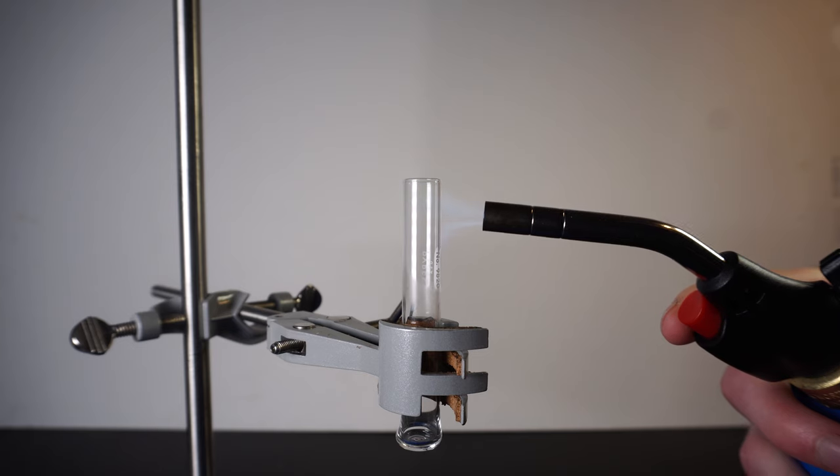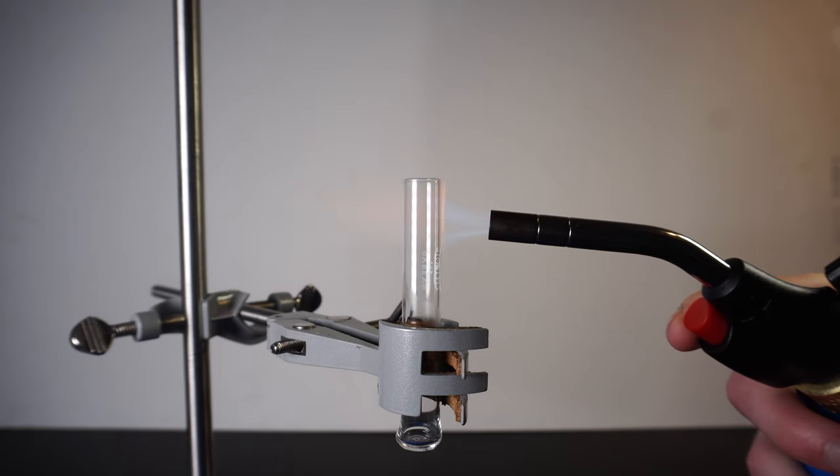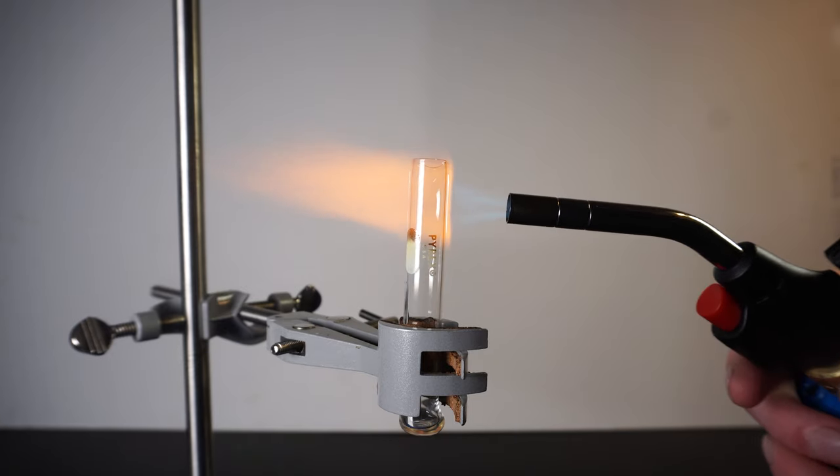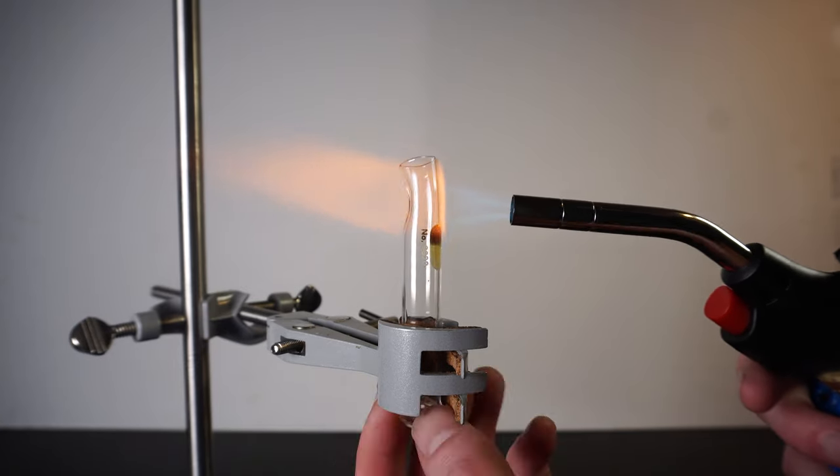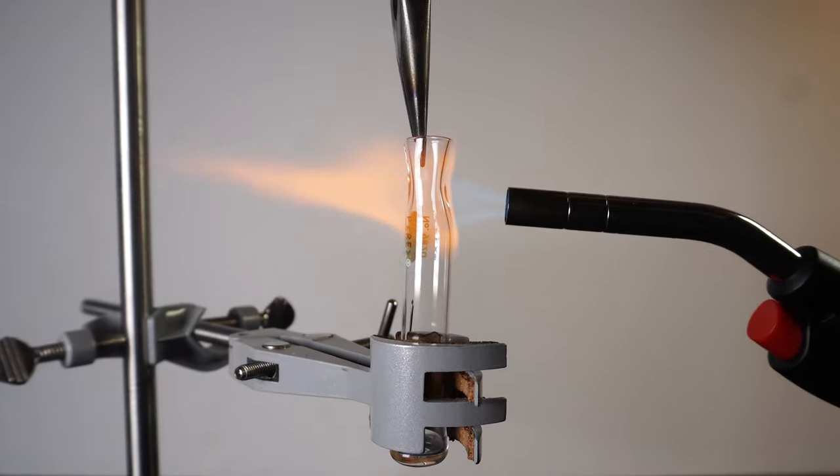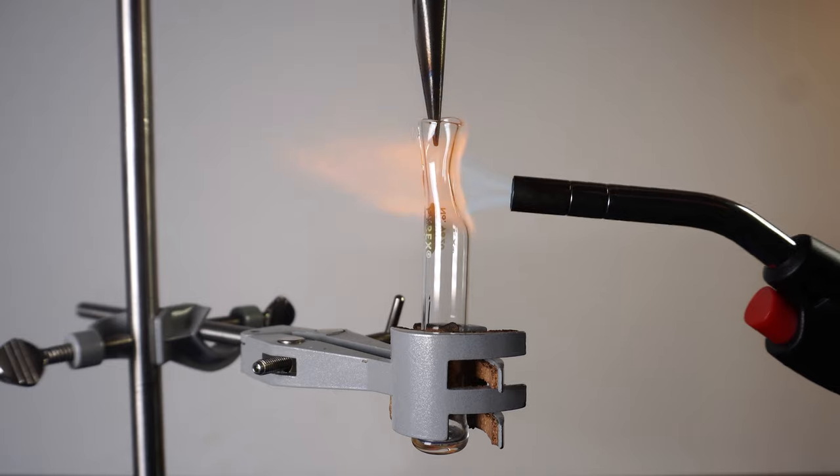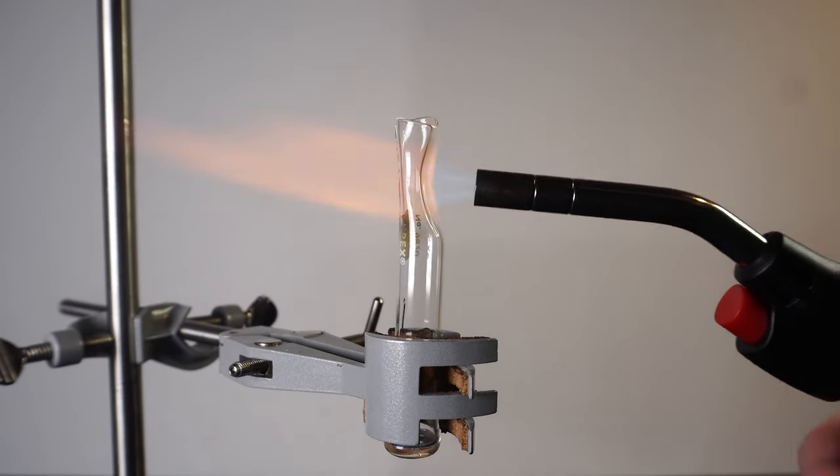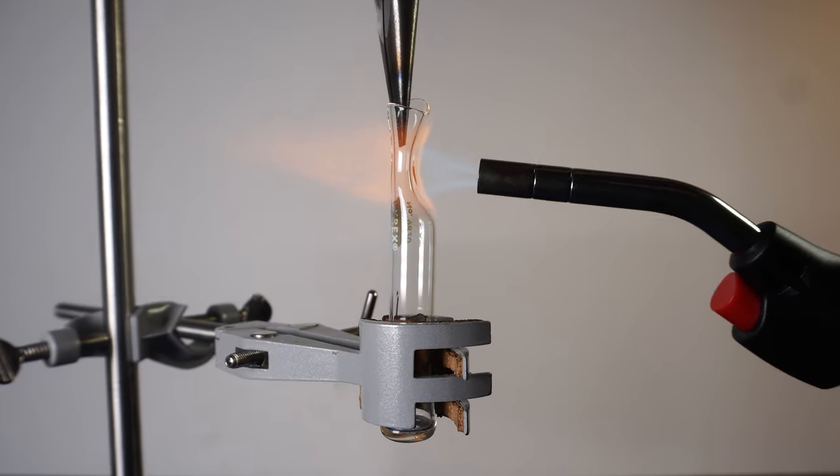Next we're going to seal the ampule, and to do that we need to heat up the sides. I rotate the test tube around slowly to get everything at least hot. After about two minutes I focus on one side of the test tube and use my pliers to gently pull at the top. Once hot enough the test tube will start to stretch and you will feel the point in which you are fully able to stretch it.